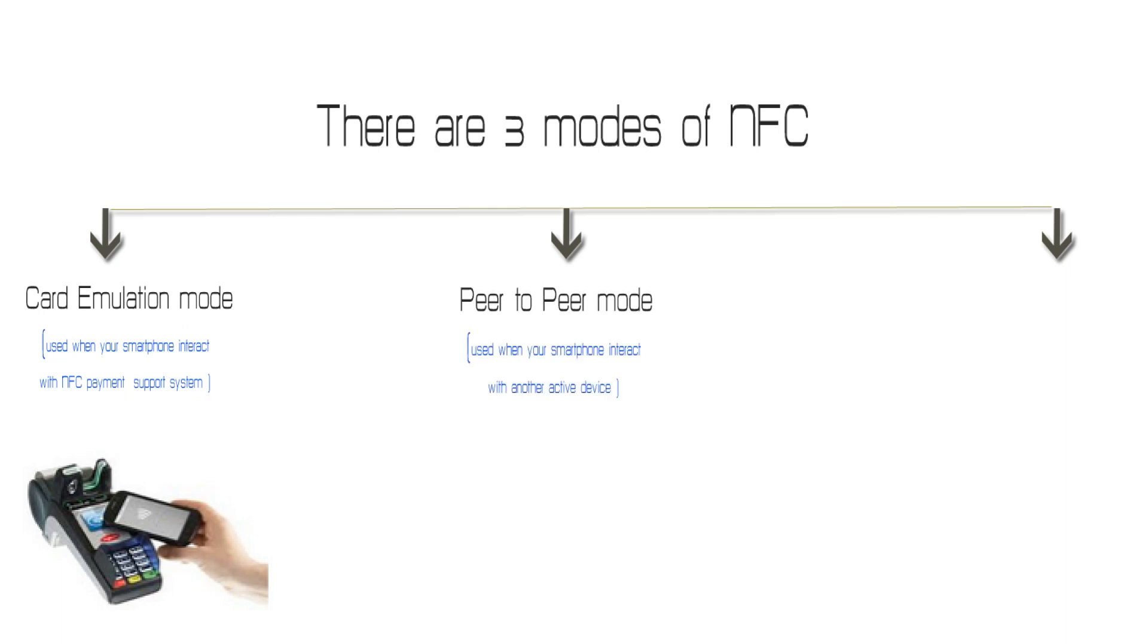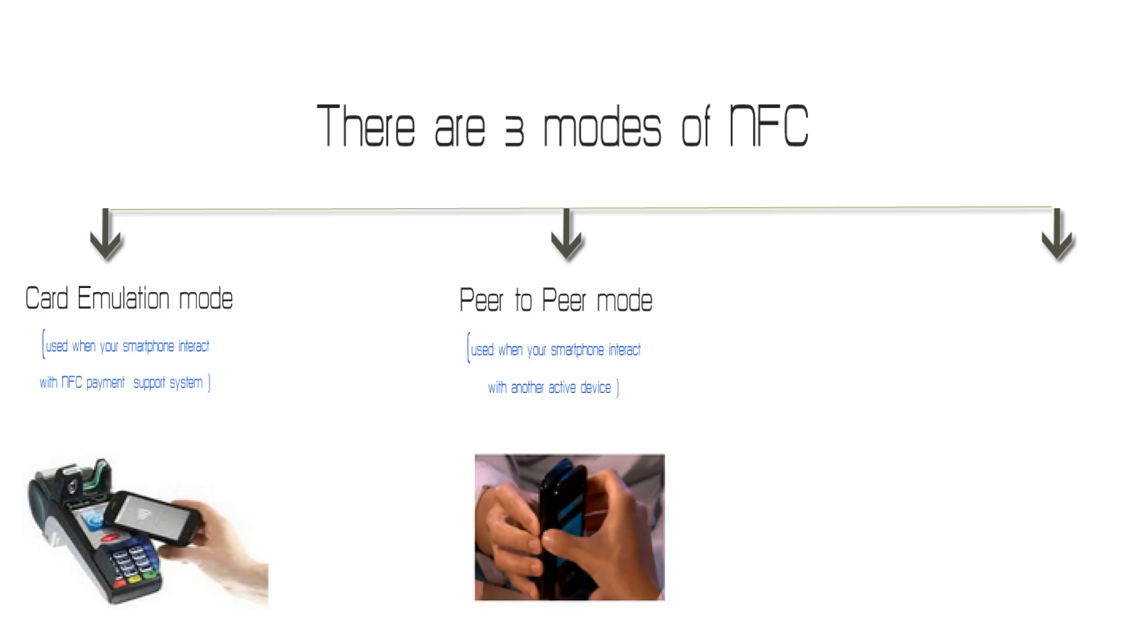And the second mode is peer-to-peer mode. This mode is used when your smartphone is interacting with another active smartphone. For example, when you are sharing a link using NFC from your smartphone to another phone that has NFC.